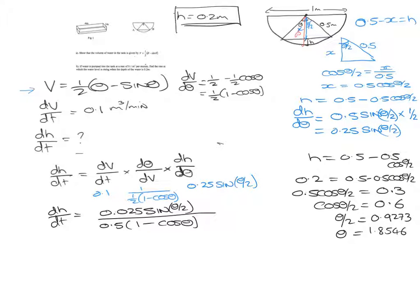So now if we substitute it in here, dH by dt is going to be 0.025 sin—now we know theta over 2 is 0.9273—over 0.5, 1 minus cos. And we know theta is 1.8546.